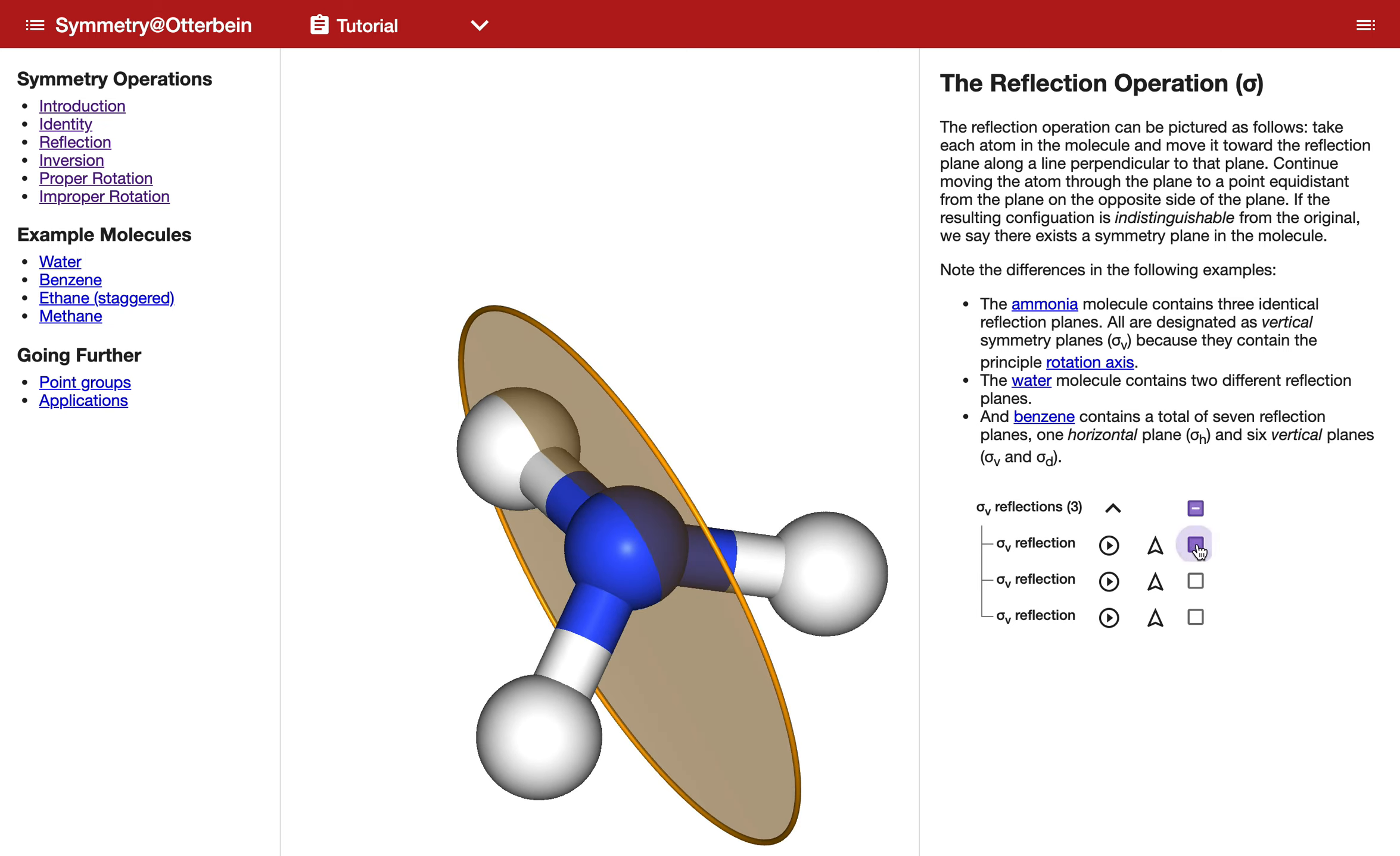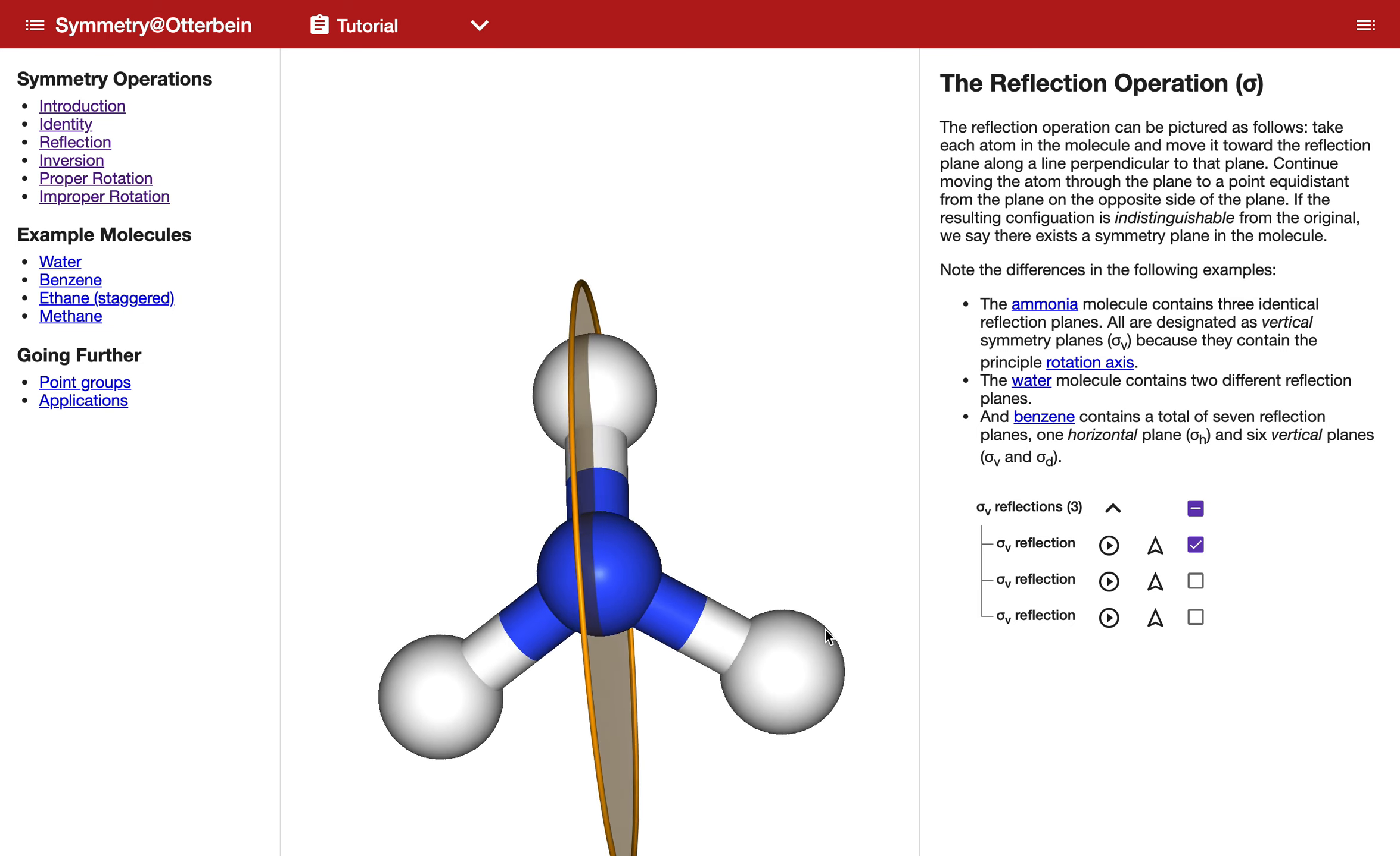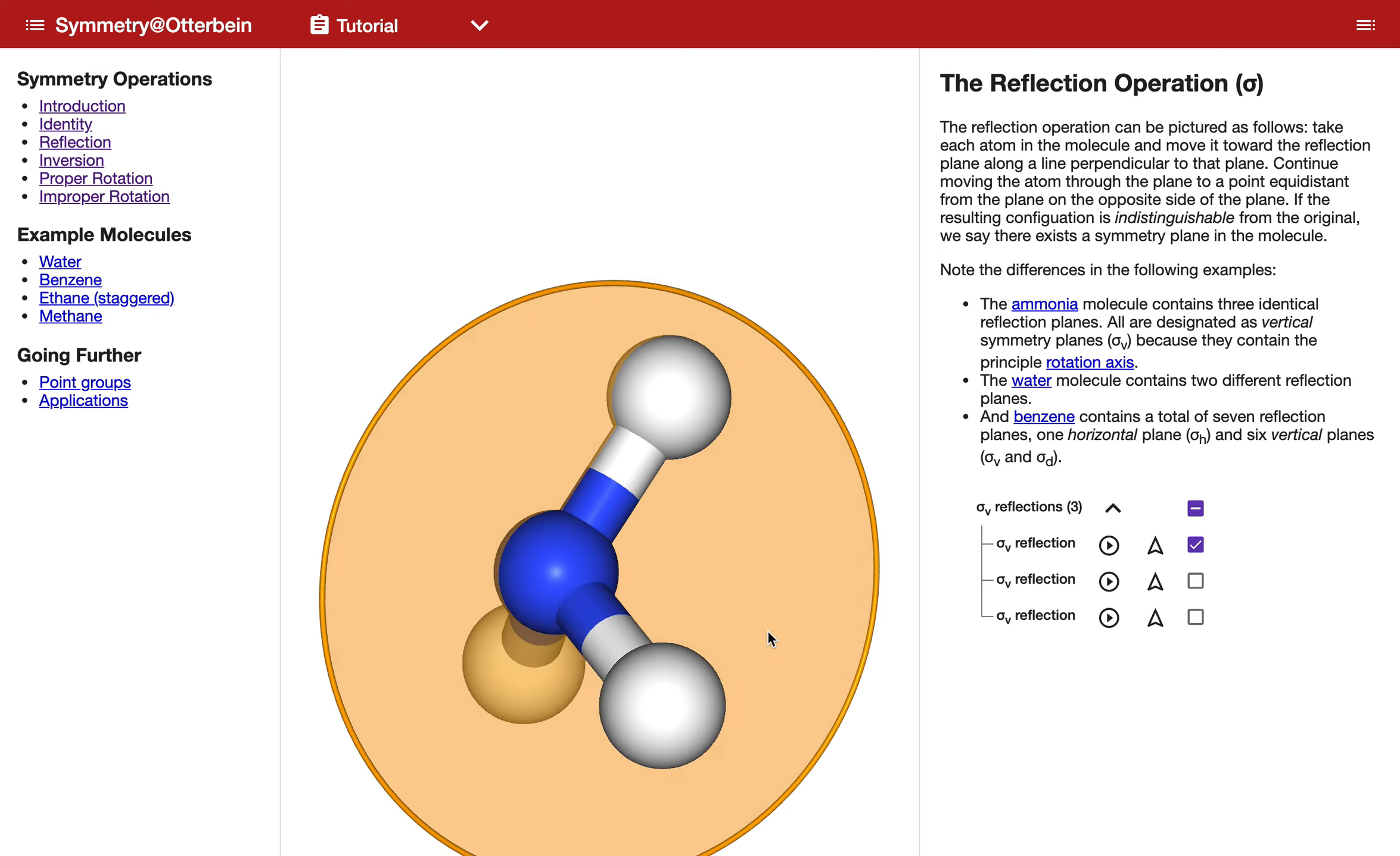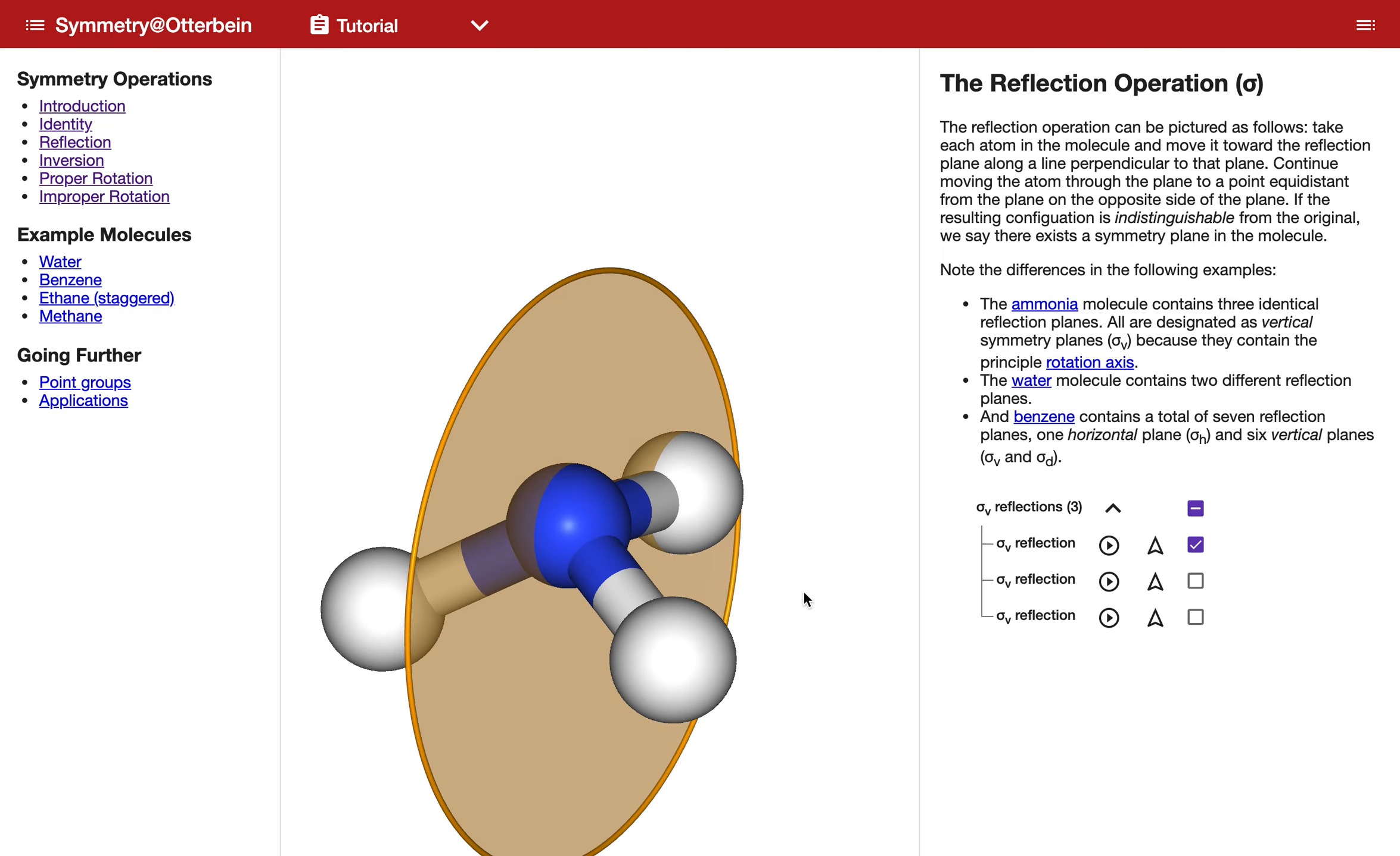If we were to click on one of these, it would show us one of these planes. You can see that each of these planes goes through the nitrogen in the middle and one of the hydrogens, and it bisects the angle between the other two hydrogens.